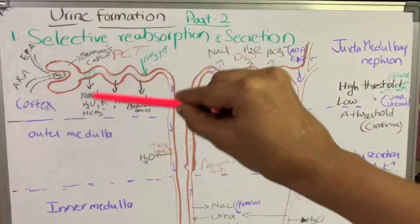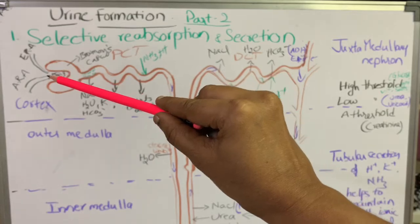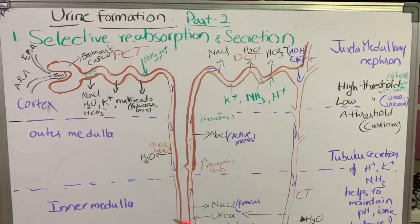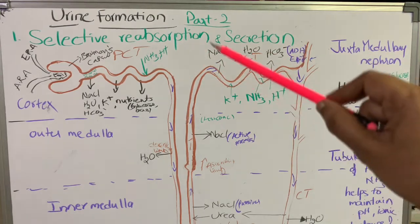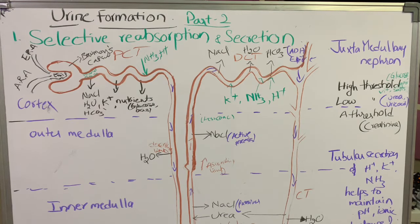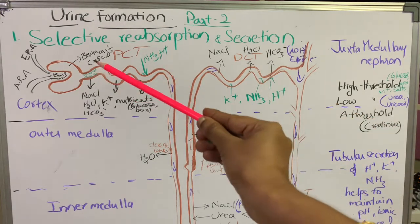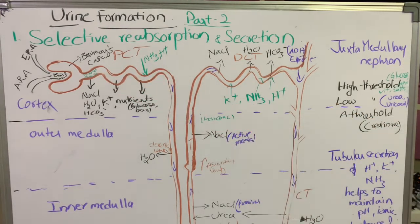Selective reabsorption occurs in the renal tubule of the kidney. The Bowman's capsule is where glomerular filtration occurs, and the renal tubule is the area where reabsorption takes place. In different parts of the nephron, different amounts of nutrients and water are reabsorbed. The epithelial cells in the proximal convoluted tubule are cuboidal cells with brush borders, which increase the area of reabsorption.